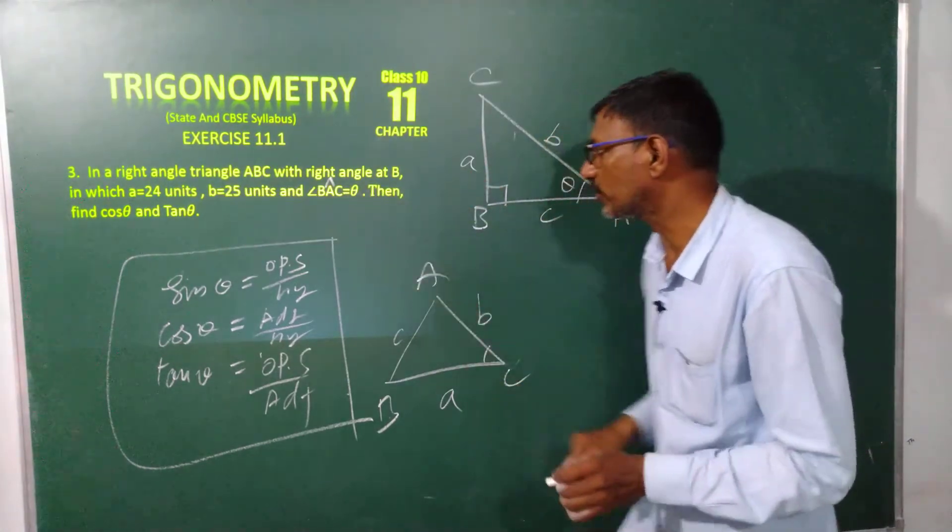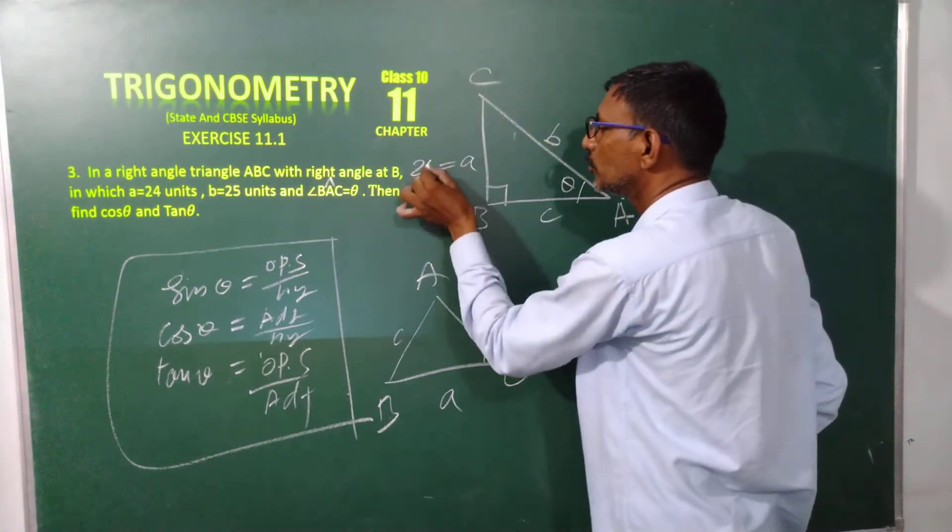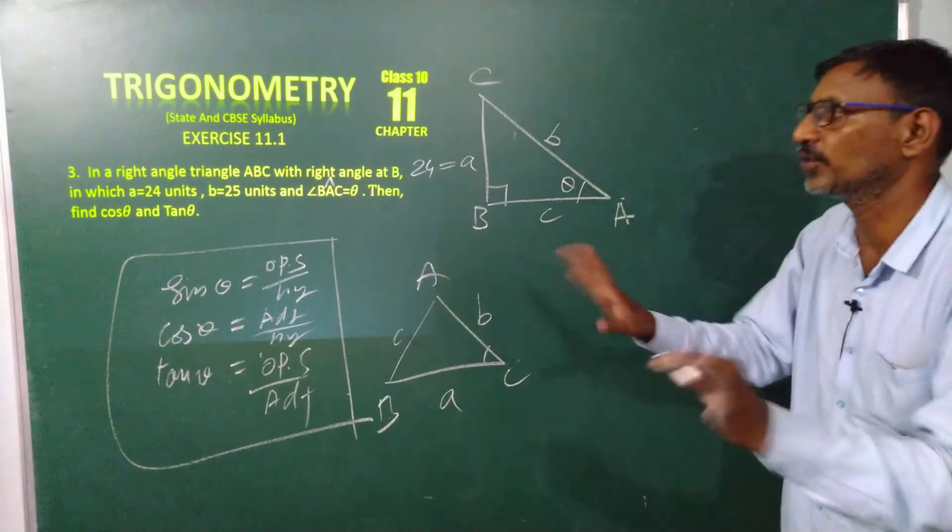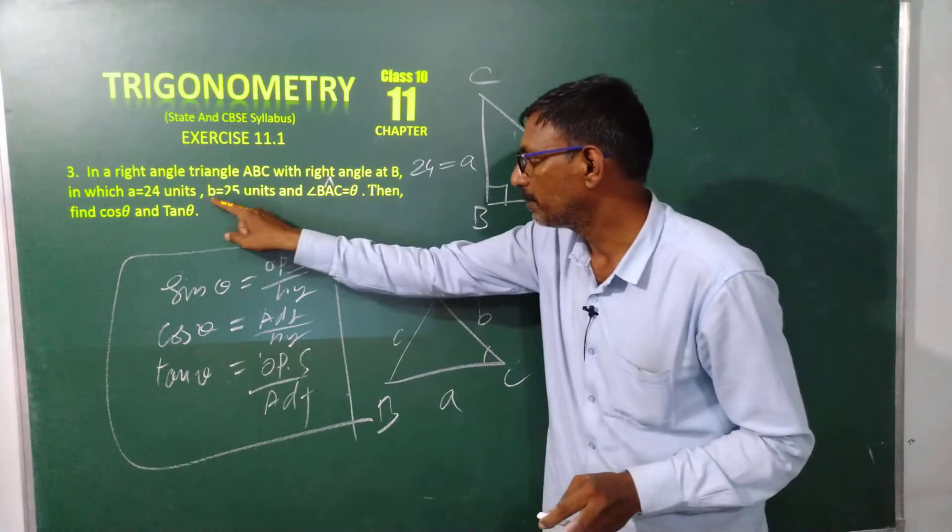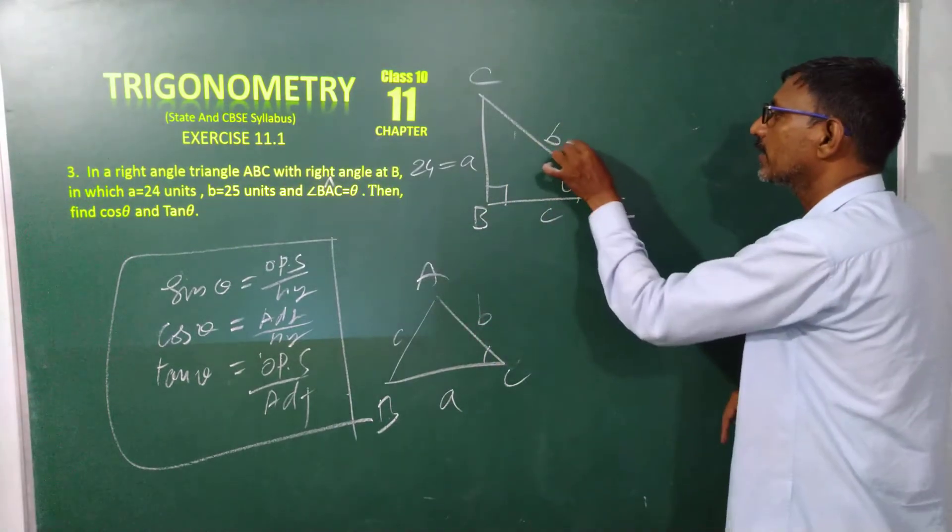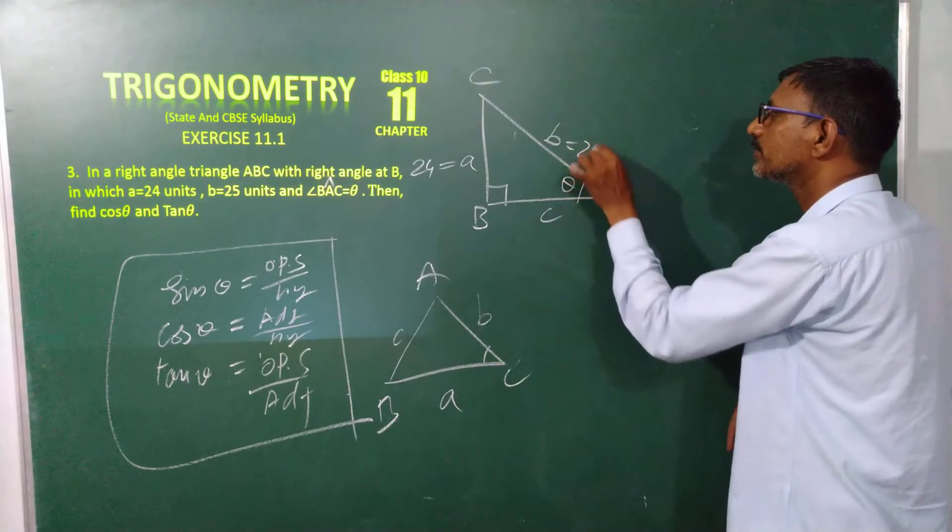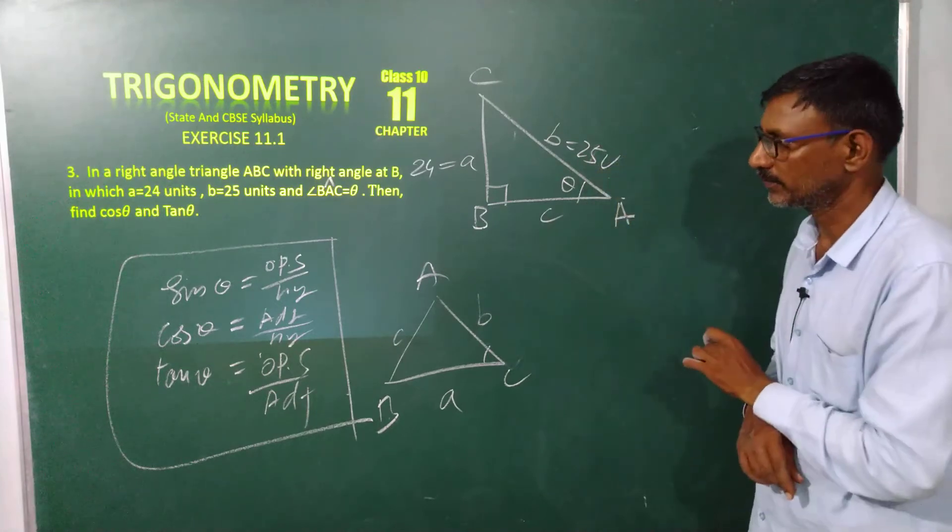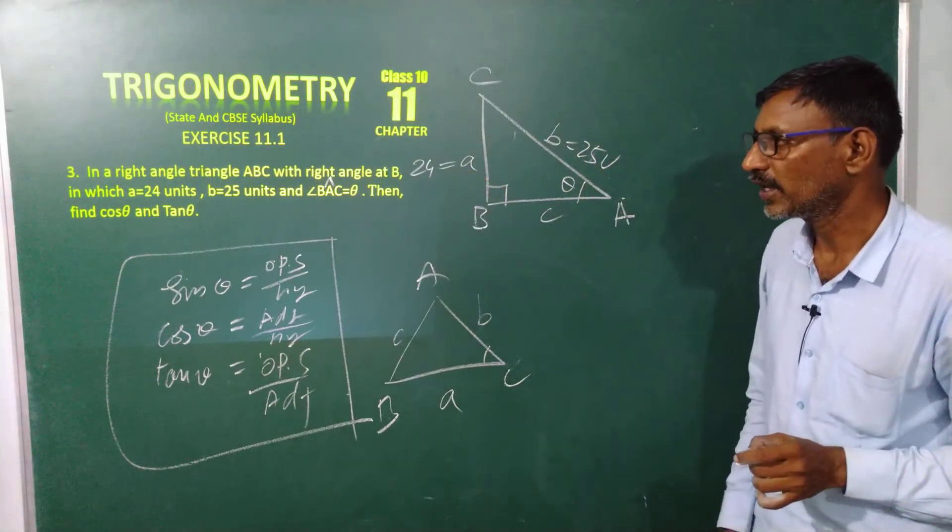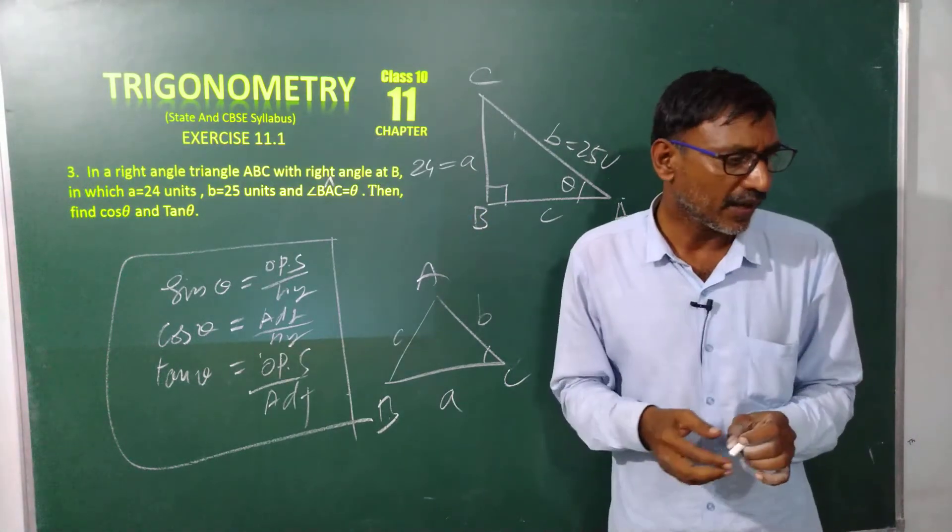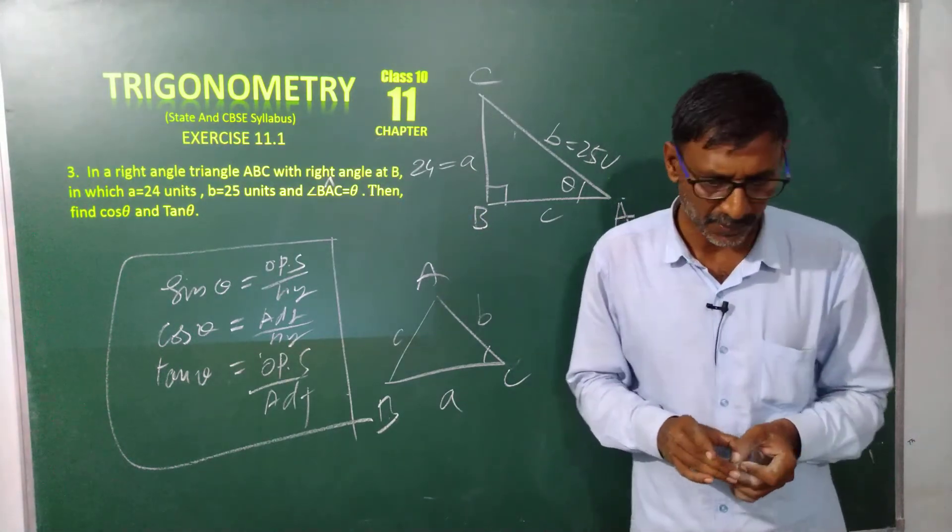Now, we can write A, A is equal to 24 centimeters or units or total. And small b is given by 25 units. A is 24 units and b is 25 units. Now we have to find cos theta and tan theta.